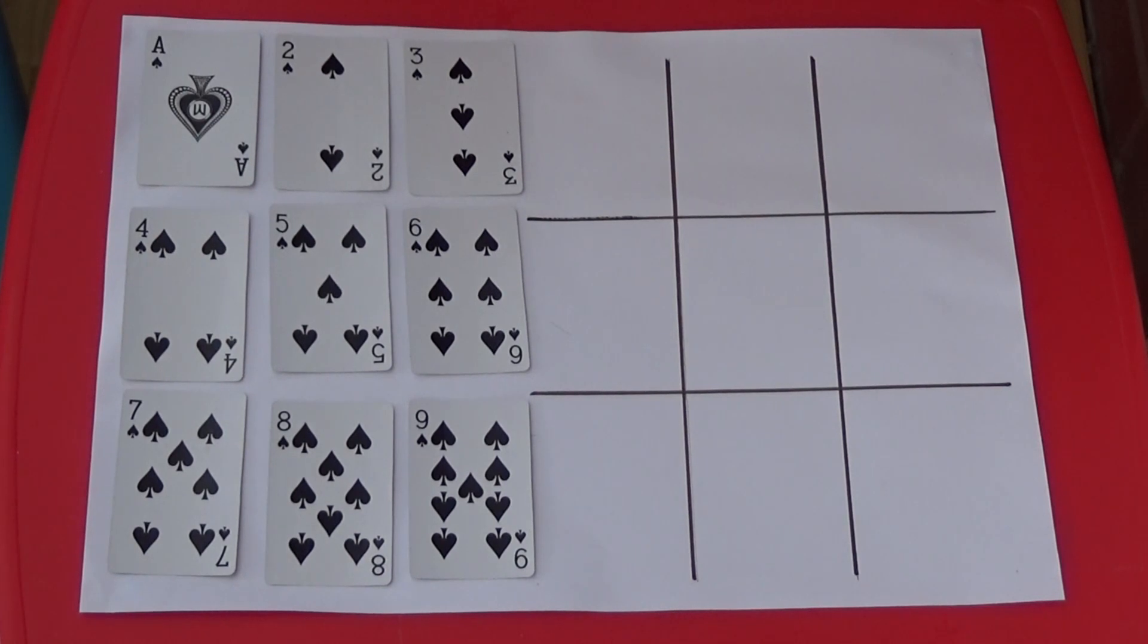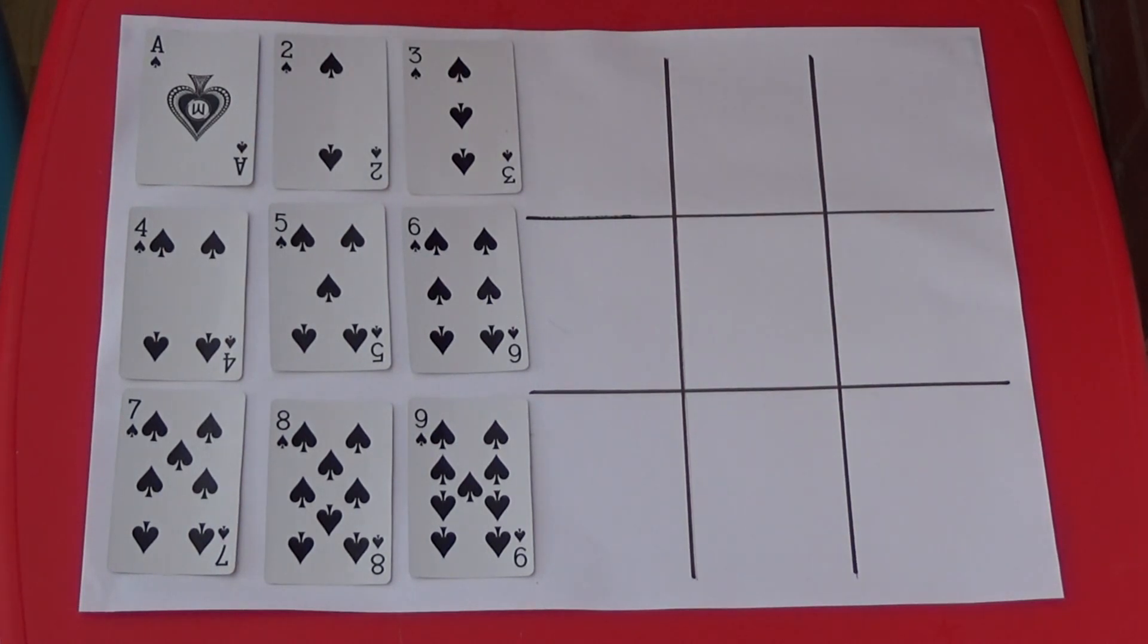Each player takes it in turns to place a number card on the board. The aim of the game is to be the first player to get a line which adds up to 15. The line can be horizontal, vertical or diagonal.